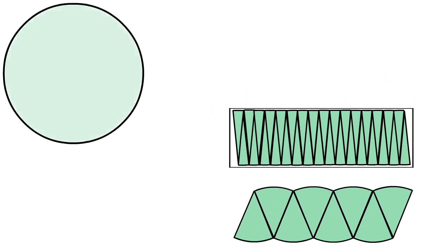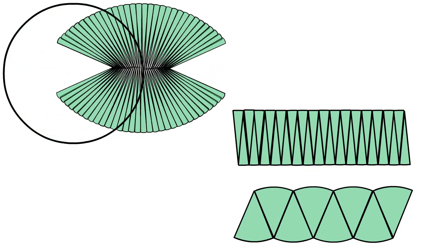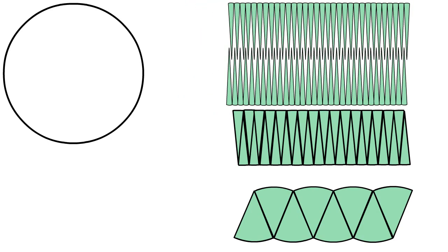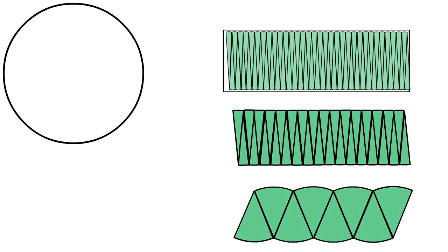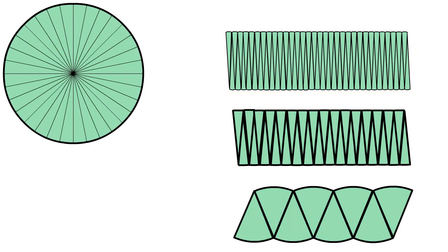So if we divide the circle into even more smaller pieces, you can see that every time the shape becomes more like a rectangle. So how small must we divide a circle before we can get a perfect rectangle?